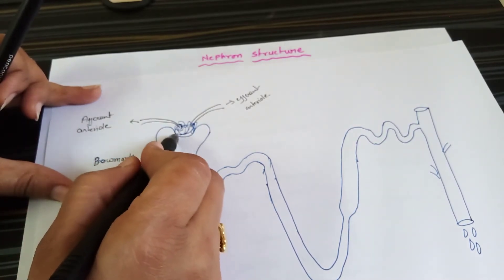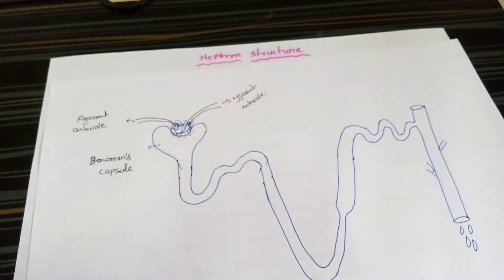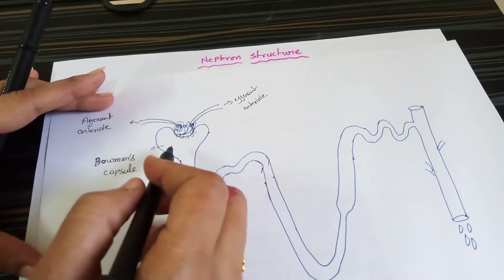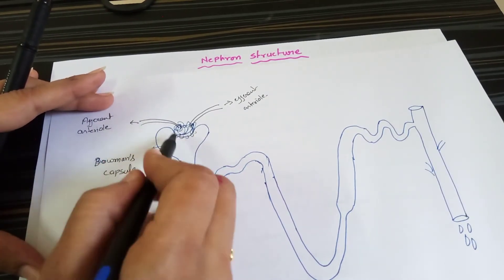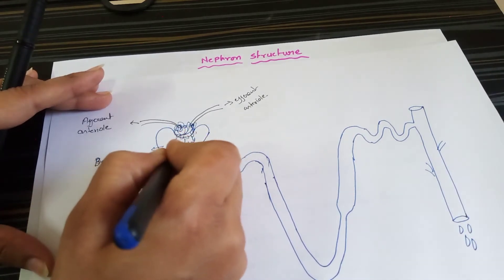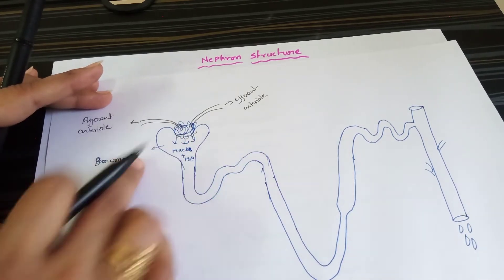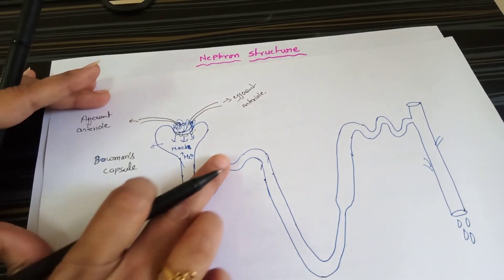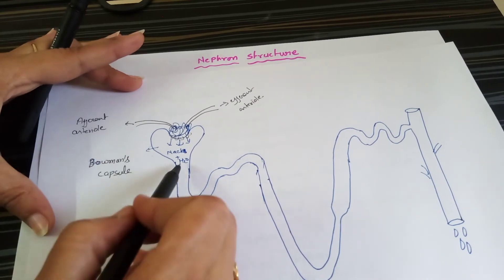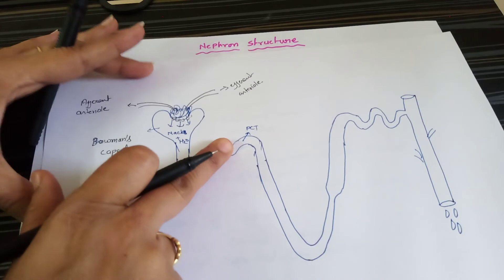When blood comes from the afferent arteriole, there are many pores present. This is permeable for both salt and water, as well as the waste products in the blood. The NaCl and water are absorbed by the Bowman's capsule and then pass into the tubule. This is the renal capsule structure.